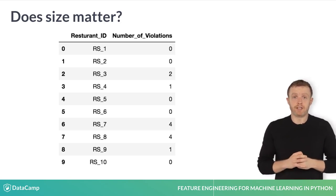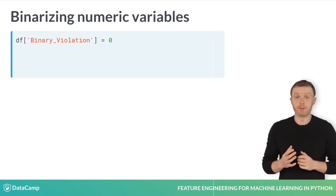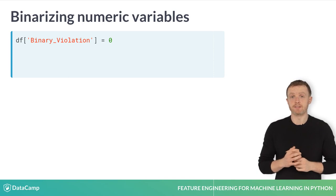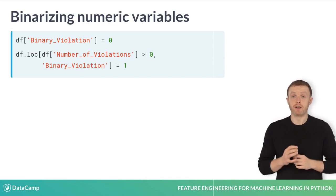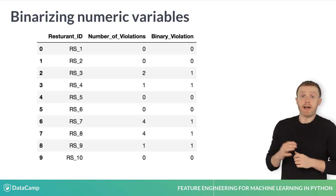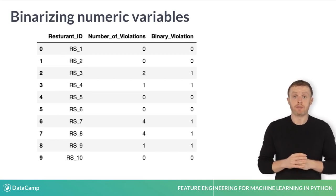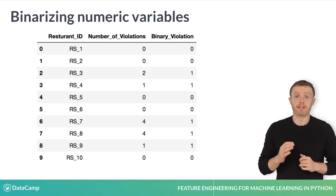We will be recreating a new binary column representing whether or not a restaurant committed any violation. Here we first create a new column, binary violation, and set it to zero. Then we use the .loc notation to find all rows where number of violations is greater than zero and set the binary violation column to one. As you can see, all rows where number of violations is equal to zero are also zeros in binary violation. However, for all rows where number of violations is greater than zero, binary violation is one.